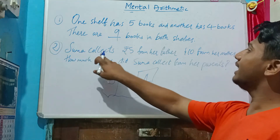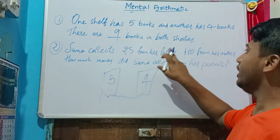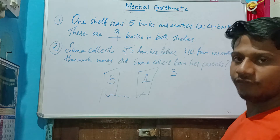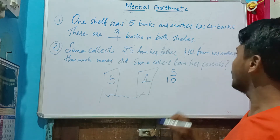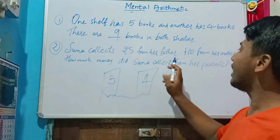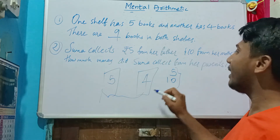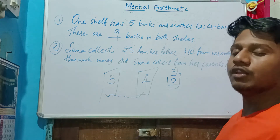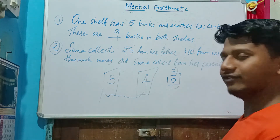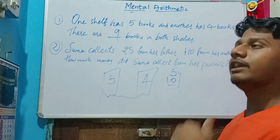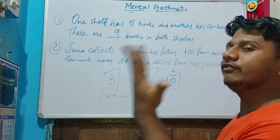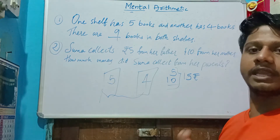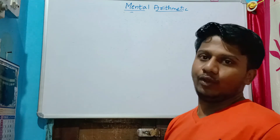Next problem: Summa collects five rupees from her father and ten rupees from her mother. How much money did Summa collect from her parents altogether? Ten is the bigger number, so add five to ten: after ten — eleven, twelve, thirteen, fourteen, fifteen. She has totally fifteen rupees.